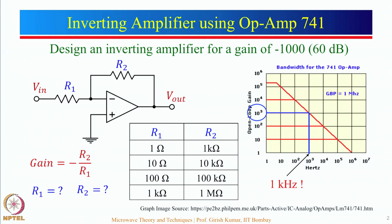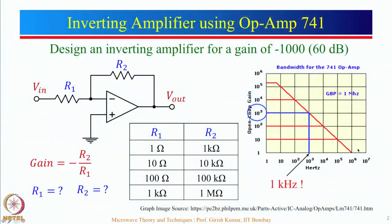I generally recommend that you design this gain in 2 or 3 stages. For example, if you use 3 stages, each stage can give a gain of 10×10×10. If you want only 2 stages, you can use a gain of 10 and 100, or maybe 31.6 and 31.6, to get an overall gain of 1000. Another thing I would generally recommend for most applications is that it is better to design a non-inverting amplifier, where the gain is given by 1 plus R2 by R1.